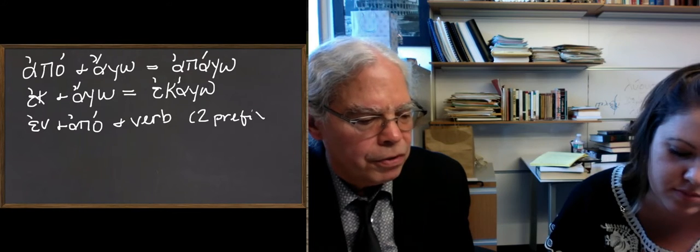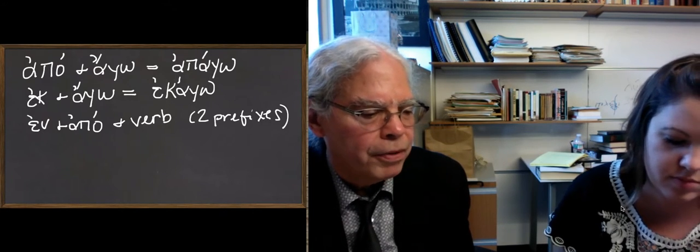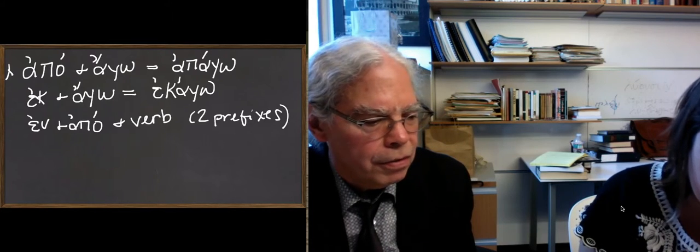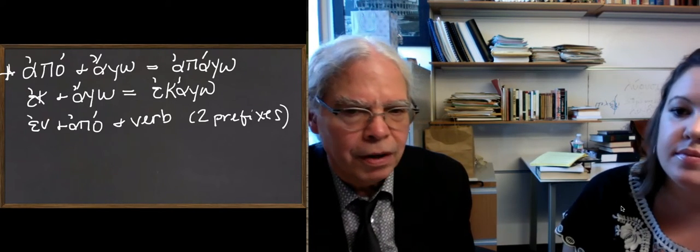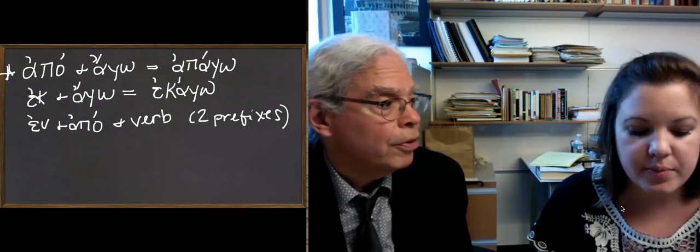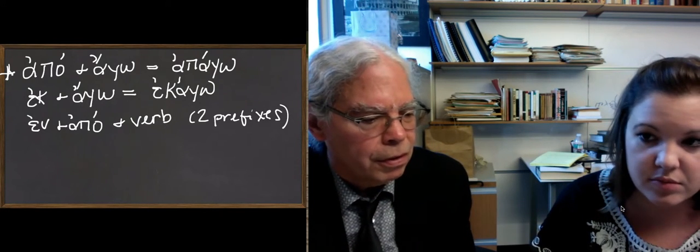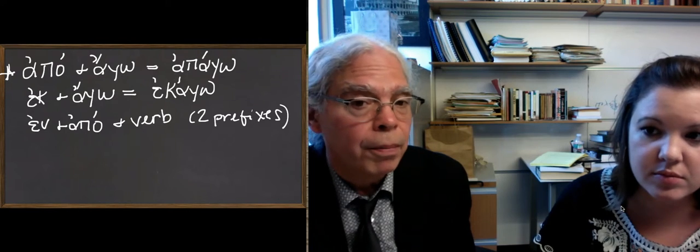So what is, let's first talk about meaning. What does apo plus ago mean? Well, it turns out that these things, since they were sentence adverbs, they don't necessarily mean the same thing as the prepositions when they're used in composition. So apago means, it does mean lead away from.